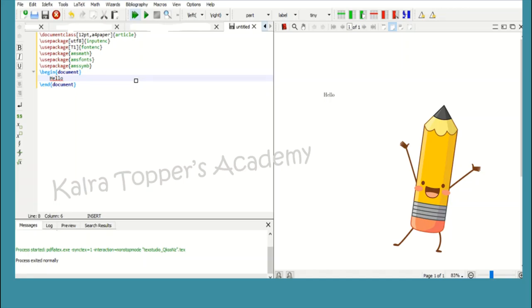AMS packages contain all the information regarding mathematical symbols. After that we click on OK. You can see that all these commands will automatically appear after you click on OK. You can write anything between begin document and end document and execute the program by clicking on the green triangle.